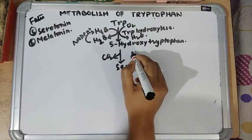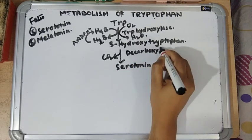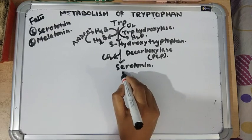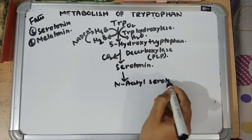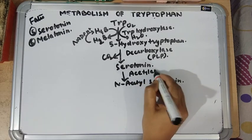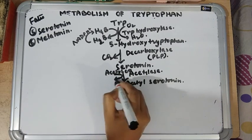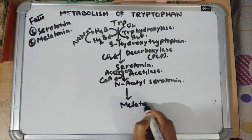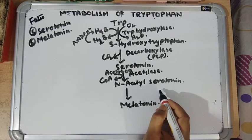This decarboxylation is catalyzed by aromatic amino acid decarboxylase, which is PLP-dependent. Serotonin or 5-hydroxytryptamine is then converted into N-acetylserotonin by the enzyme serotonin N-acetyltransferase, with the acetyl moiety donated by acetyl coenzyme A. N-Acetylserotonin is converted into melatonin by methylation, catalyzed by N-acetylserotonin O-methyltransferase.